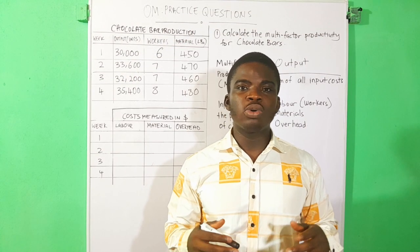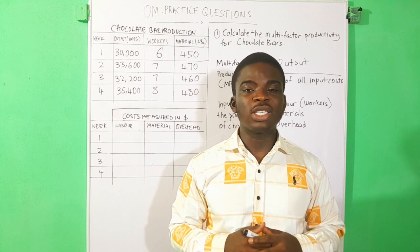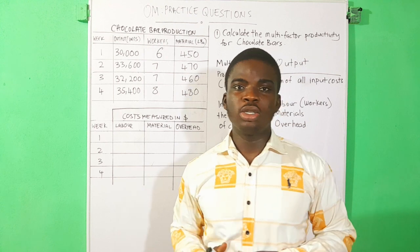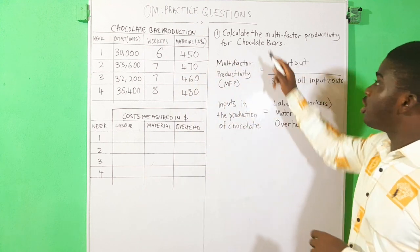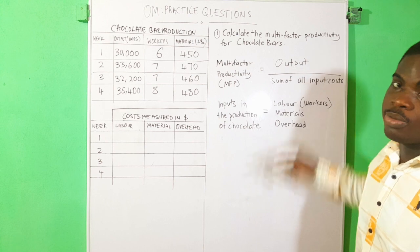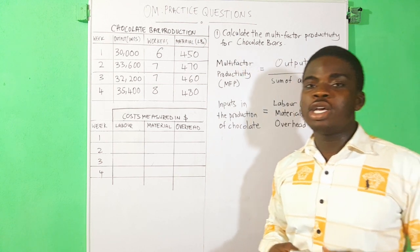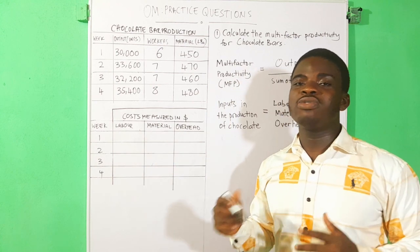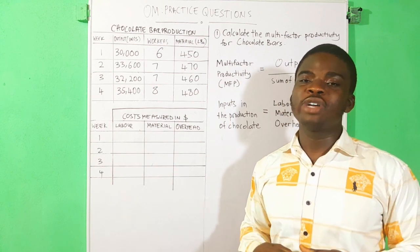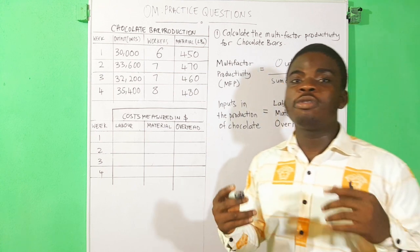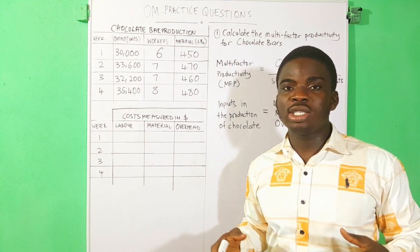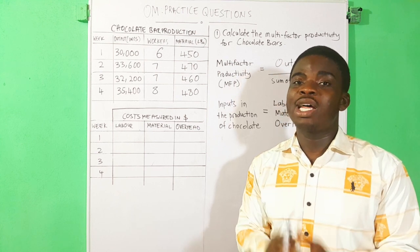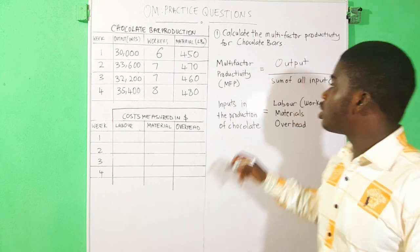We have another question on the multi-factor productivity and we are going to solve it. From the question, you realize that you have been asked to find the multi-factor productivity for the production of chocolate bars. As mentioned in the other video, whenever you are given questions of this nature, it is essential to first write down your formula, because by writing down your formula you know how to go about the question.